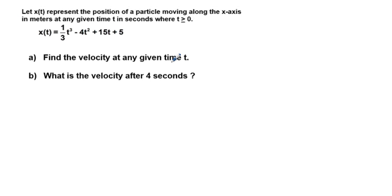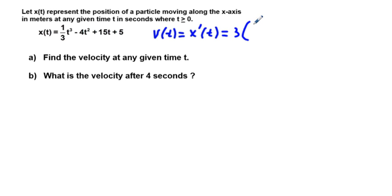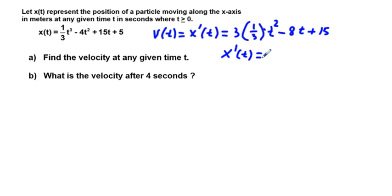First, we find the velocity at any given time t. The velocity v of t is equal to the first derivative of the position, so v of t equals x prime of t. Using the power rule, we get 3 times one-third times t squared minus 2 times 4t plus 15, which simplifies to x prime of t equals t squared minus 8t plus 15. This is our velocity function for any given time t.